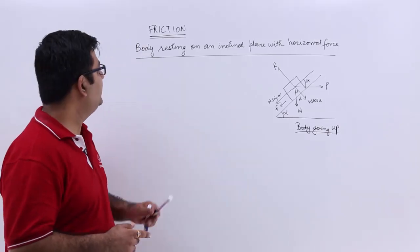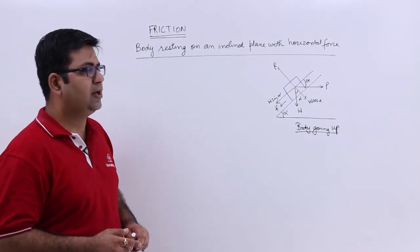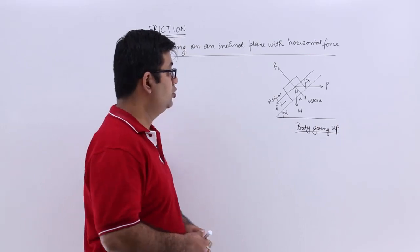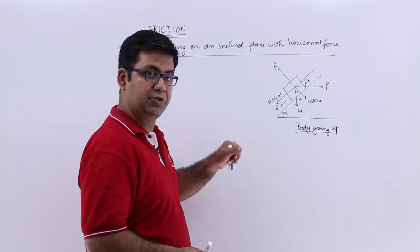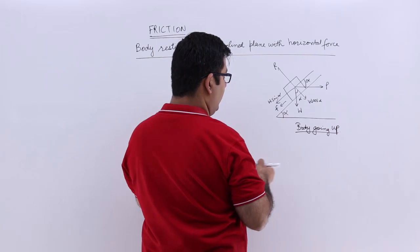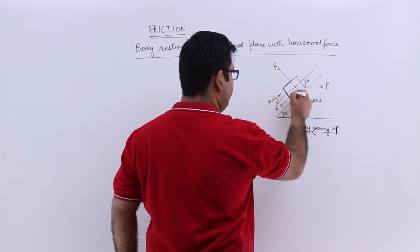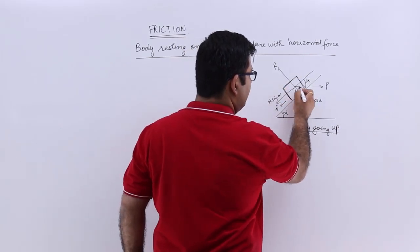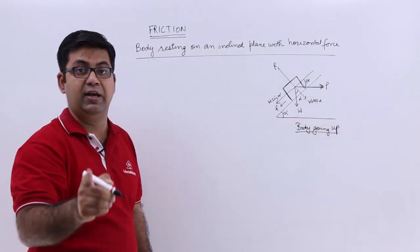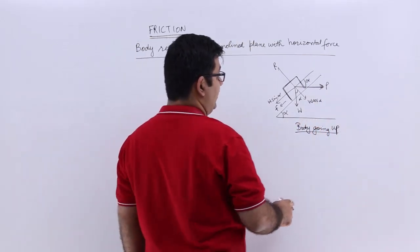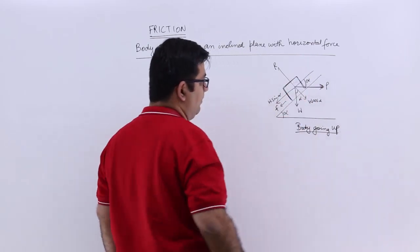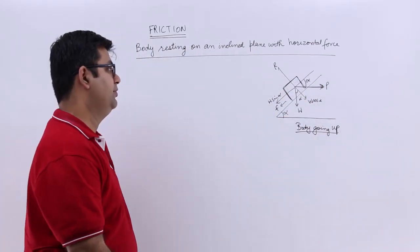Now let's talk about the body on an inclined plane with a horizontal force. This is the figure for it — you have an inclined plane, a body resting on it, and the force is horizontal, not inclined. It makes an angle of alpha with the line parallel to the inclined surface.